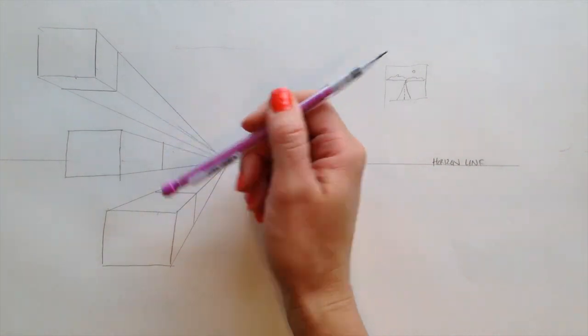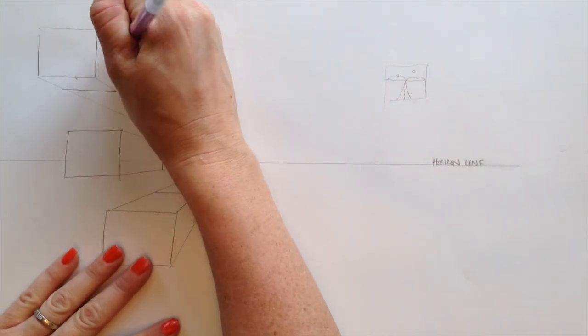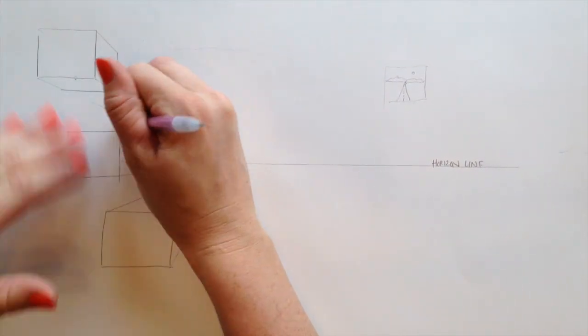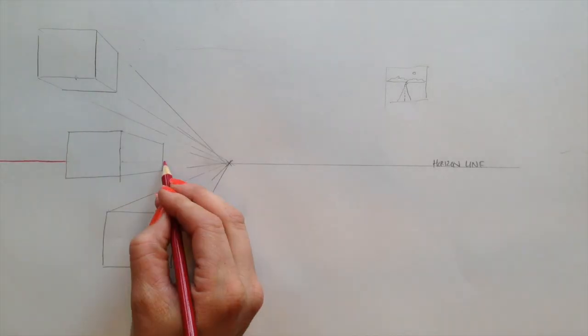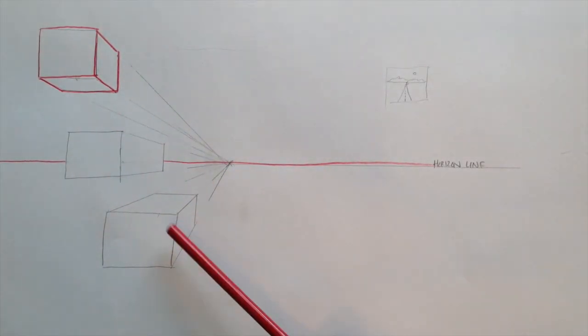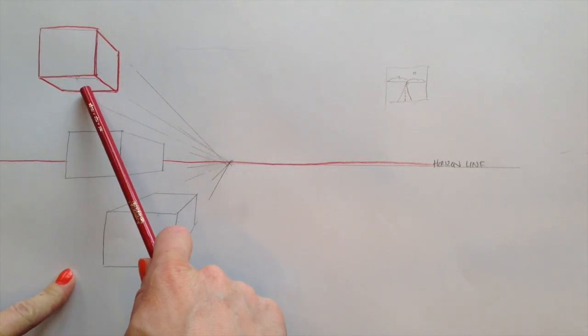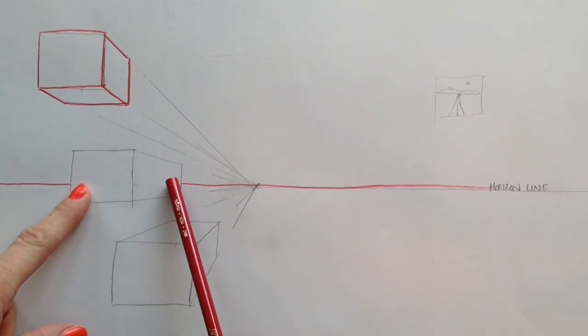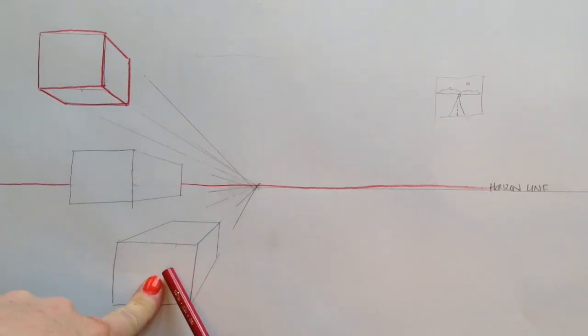As you can see, we have these lines drawn, but it's still kind of hard to see our boxes. So I'm going to erase these lines. This is our horizon line. So we have our three boxes. So the box that's above us, we can see the bottom of it. The box that's in front of us, we can see the side of it and the front. And the box that's below us, we can see the top of it and the side and the front.